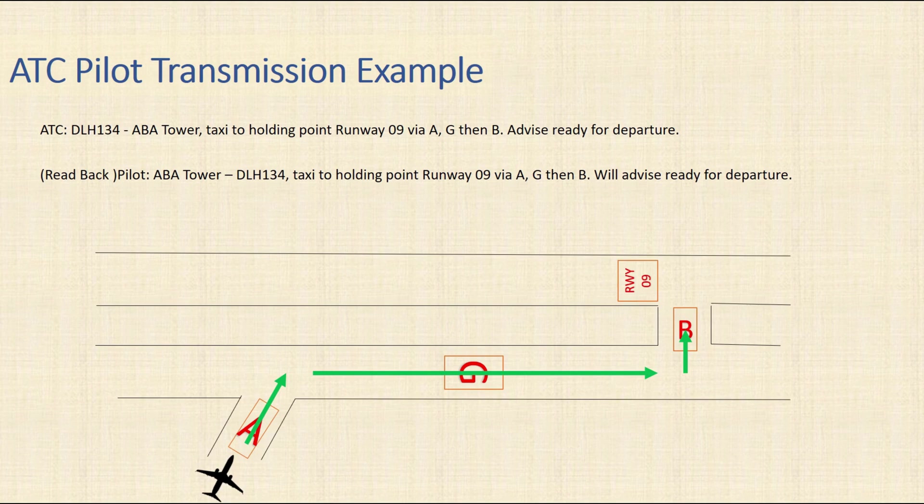ATC and pilot transmission example. ATC: 'Lufthansa one three four, Ava tower, taxi to holding point runway zero niner via Alpha Golf then Bravo, advise ready for departure.' Pilot readback: 'Ava tower, Lufthansa one three four, taxi to holding point runway zero niner via Alpha Golf then Bravo, will advise ready for departure.'